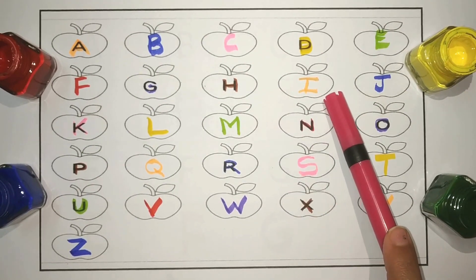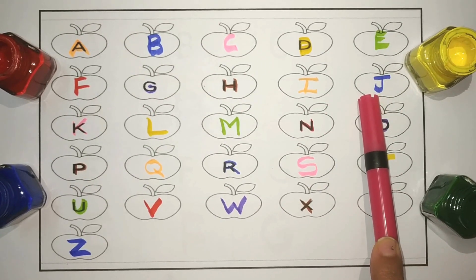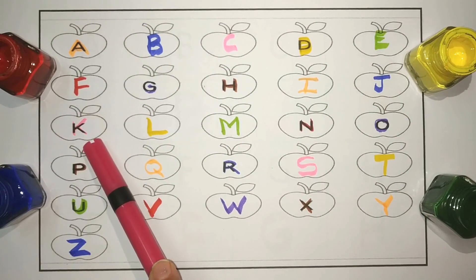I. I for ice cream. J. J for jam. K. K for kite.